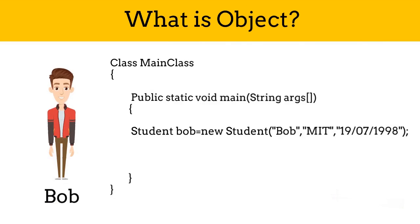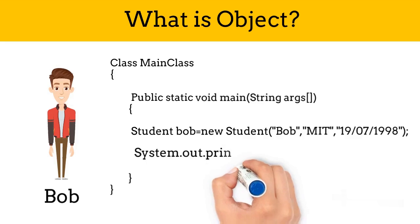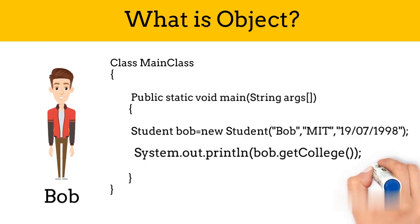We will use the new keyword for creating new objects. Then we will pass name, college, and date of birth to the constructor. You can see the syntax on screen. If you want to know the college of Bob, then we will just use the object name dot getCollege function. In our case, it is Bob dot getCollege. Similarly, you can access other variables also.